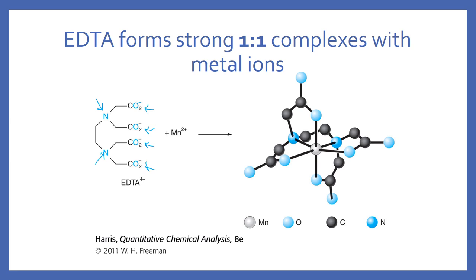If you take EDTA plus any metal — in this case manganese 2+ — and let them react, the metal is in the center and the EDTA has bonded to it in six different places, wrapped around and bonded to this metal. It takes one EDTA molecule to complex with one metal, chelating and bonding in six sites — so it's still a one-to-one complex.